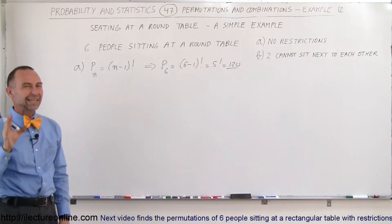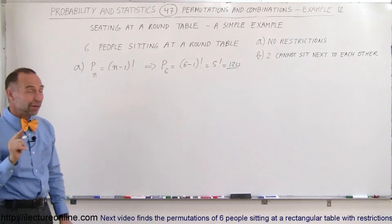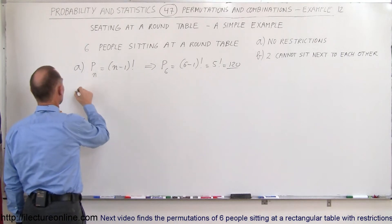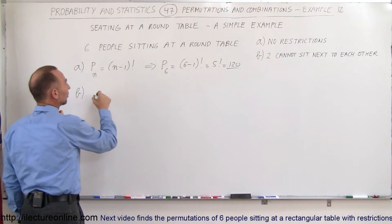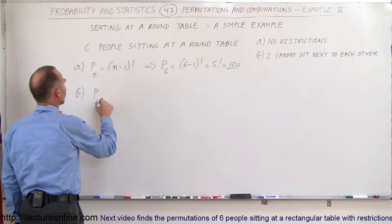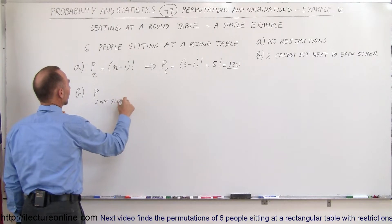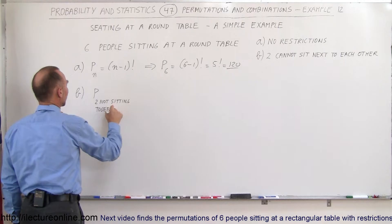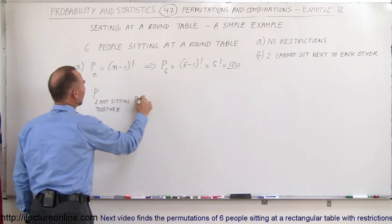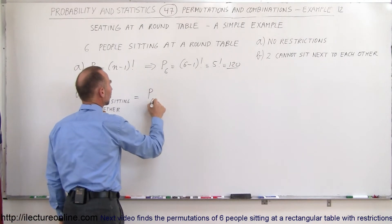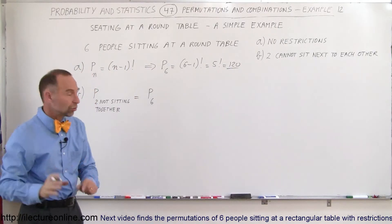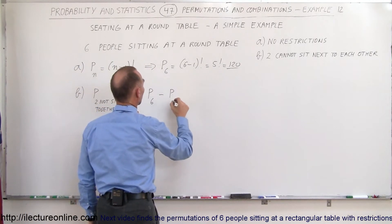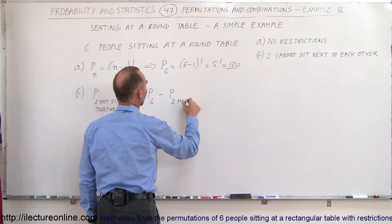What if there's two people that cannot sit together? Well the best way to figure that out is to do it this way. The number of permutations with two not sitting together or next to each other is equal to the number of permutations for six people with no restrictions minus the number of people where two must sit together.